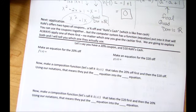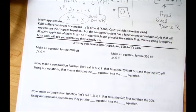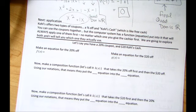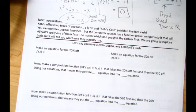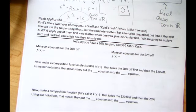You can use these coupons together at the same time, but their computer system has a function, which is just an equation built into it, that will always take one of those first, either the percent or the cash off first, no matter which one you submit to the cashier first. We are going to explore both, and I will tell you which one they actually use.